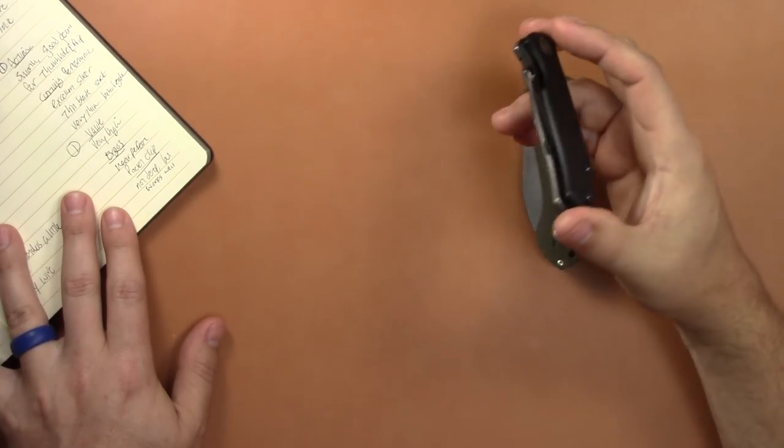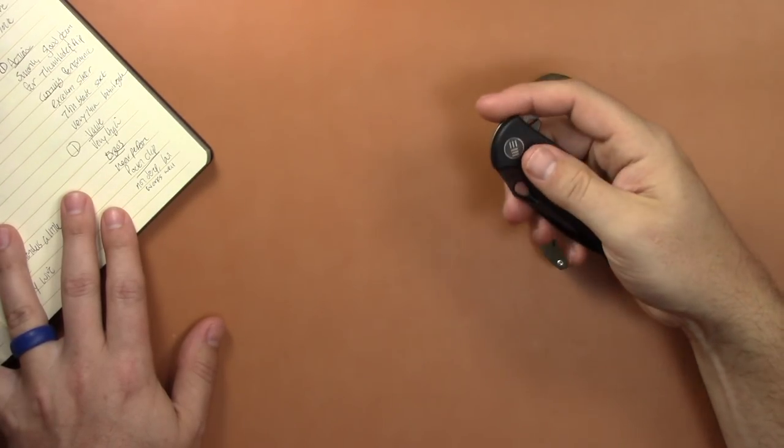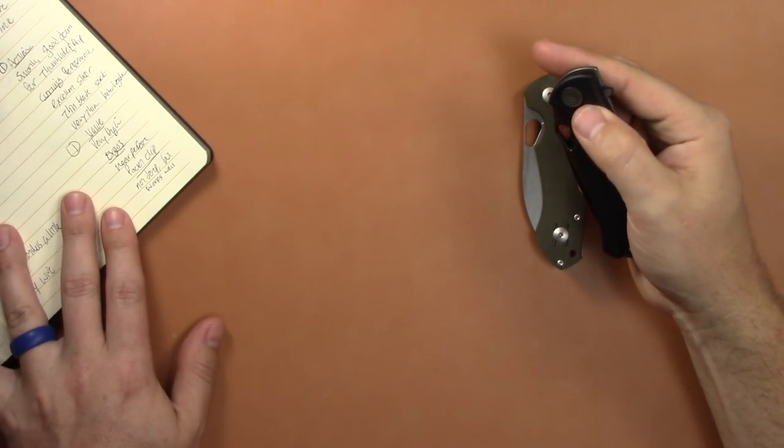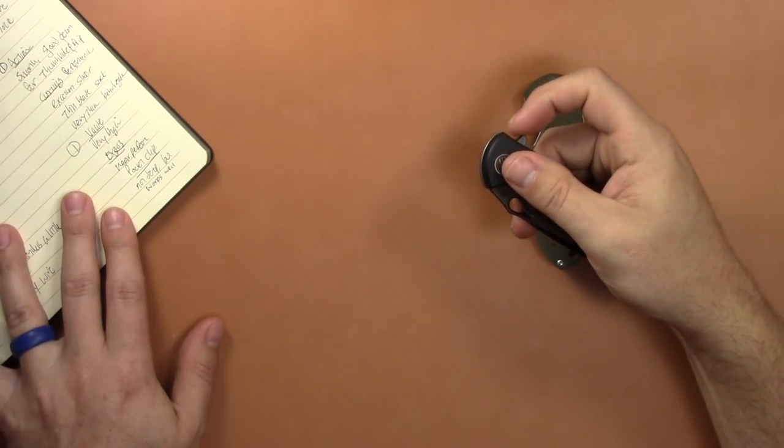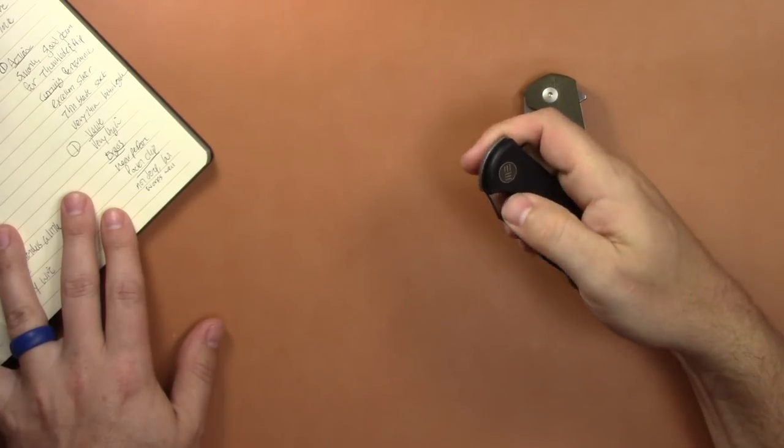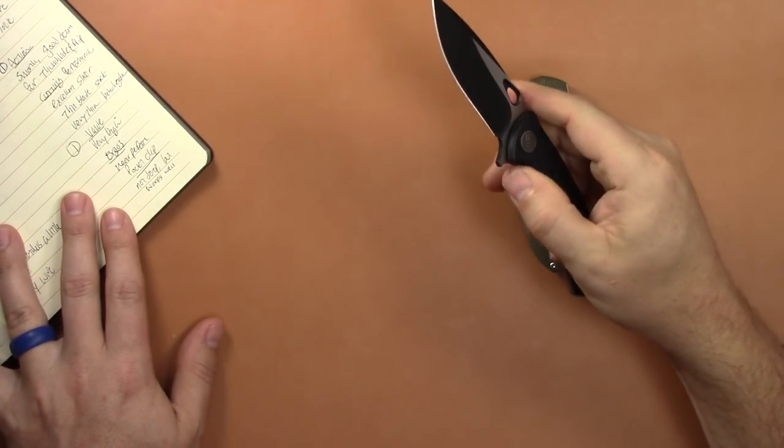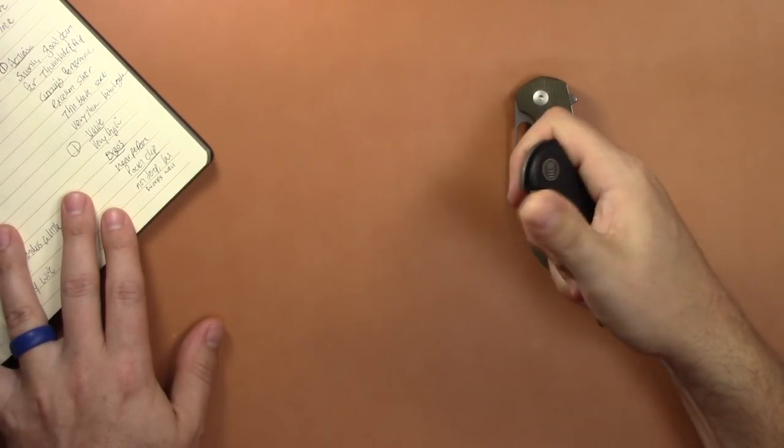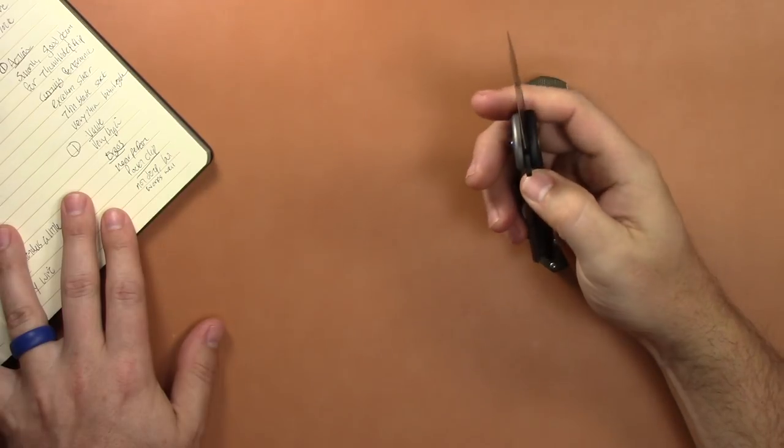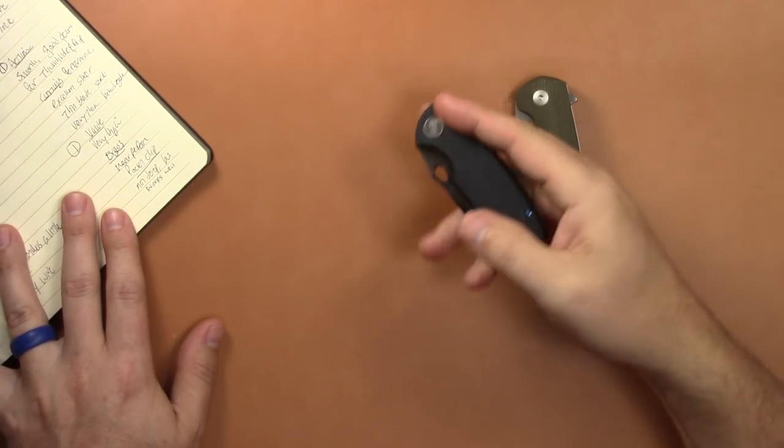On the action of this knife you have both on bearings and both are flippers or can be deployed with the different opening holes here. So the rectifier has really nice snappy flipping action. It also can be slowly opened with a thumb hole. It can be middle finger flicked without issue and you can use the thumb hole too, kind of like a thumb stud. So it has four basically different deployment options of the knife.